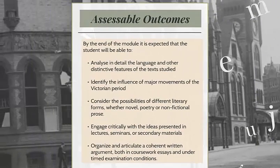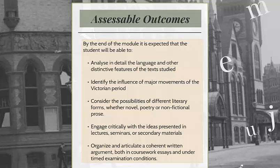By the end of the module, students will be expected to analyse in detail the language and other distinctive features of the texts studied, identify the influence of major movements of the Victorian period, consider the possibilities of different literary forms — whether novel, poetry, or non-fiction prose — engage critically with the ideas presented in lectures, seminars, or secondary materials, and finally organise and articulate a coherent written argument both in coursework essays and under timed examination conditions.